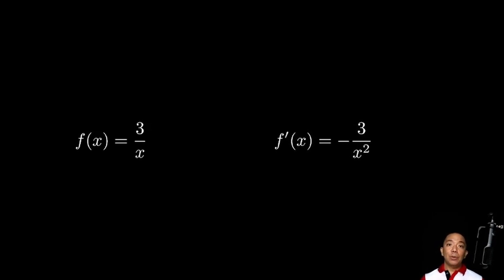So, what we'll get after we evaluate the limit is that f prime of x is equal to negative 3 over x squared which is the same expression na nakuha natin kanina nung pinlot natin yung points nung slope nung tangent line pa isa-isa.